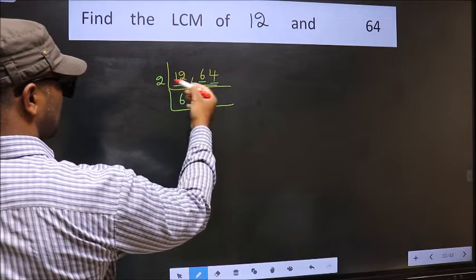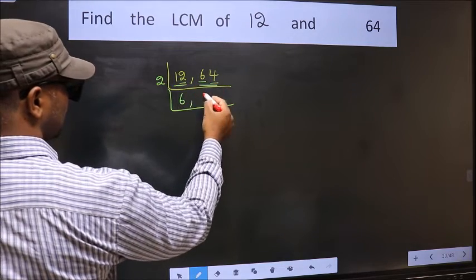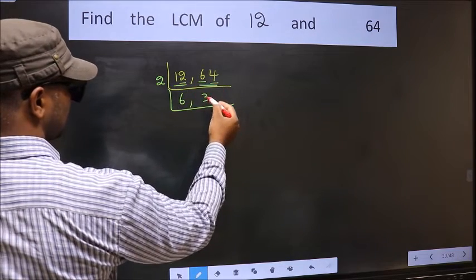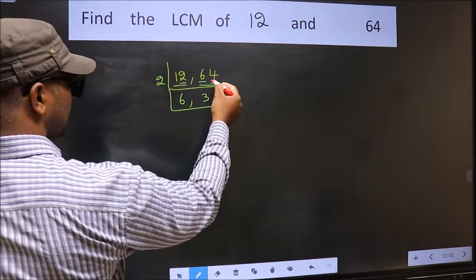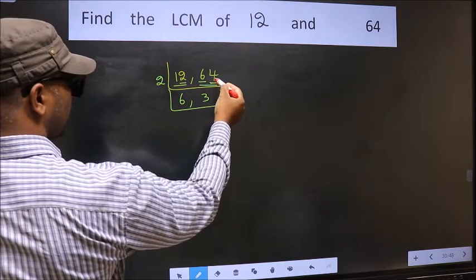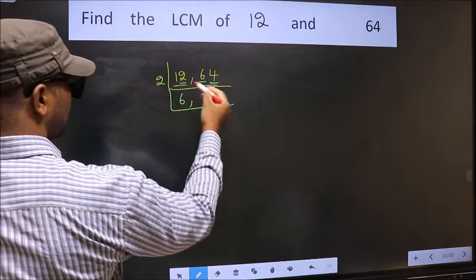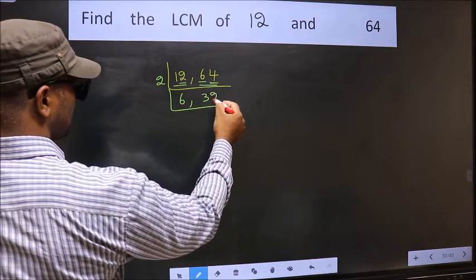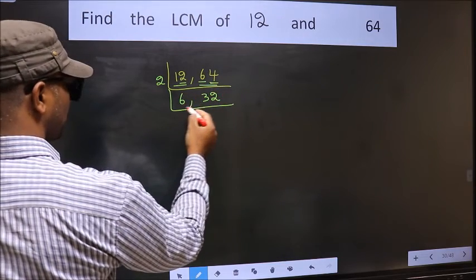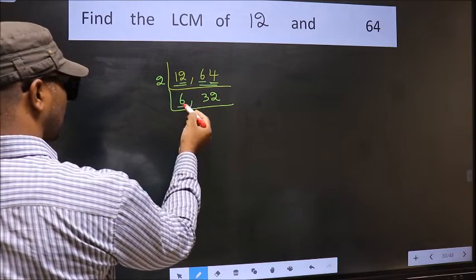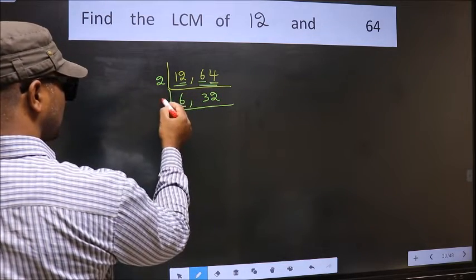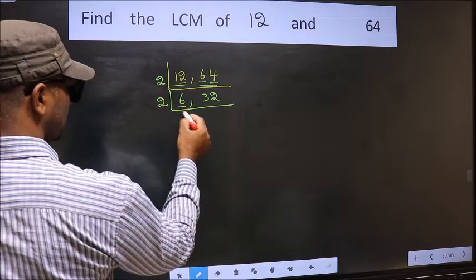First number 6 — when do we get 6 in the 2 table? 2, 3, 6. The other number 4 — when do we get 4 in the 2 table? 2 times 2 is 4. Now here we have 6.